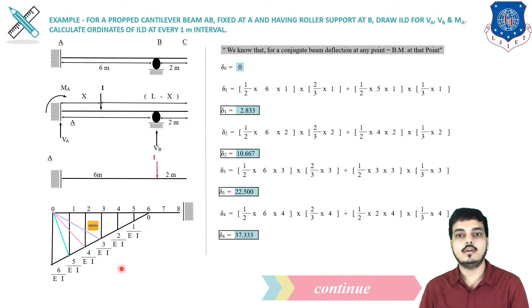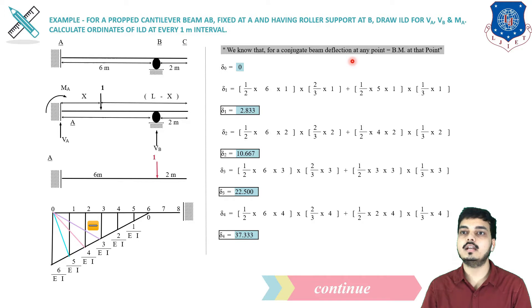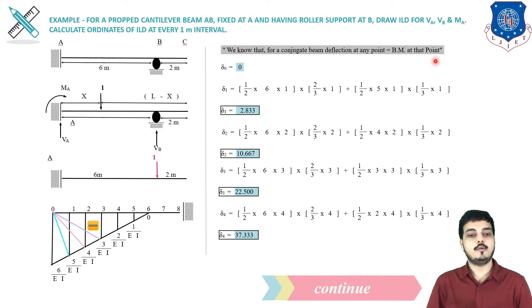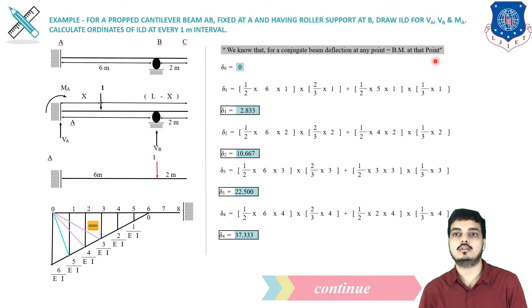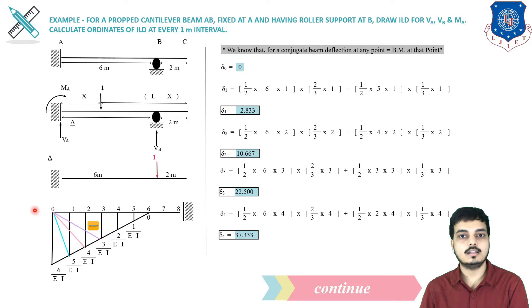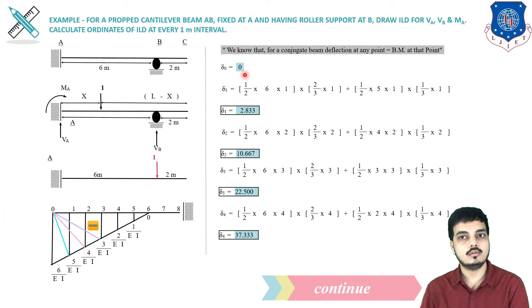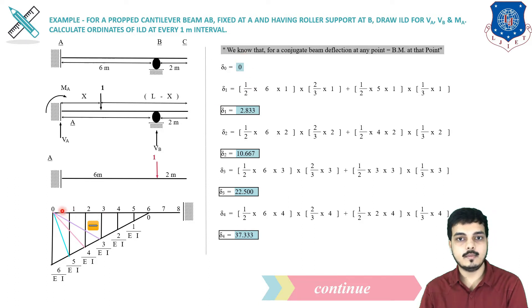Now we find delta for each point. For a conjugate beam, deflection at any point equals the bending moment at that point. And bending moment at any point equals area multiplied by the centroid distance (CG). Standing at point 0 on the left-hand side there is no bending moment diagram, so delta 0 = 0. Standing at point 1, the bending moment diagram goes 0, 6, 5, 1, and back to 0.